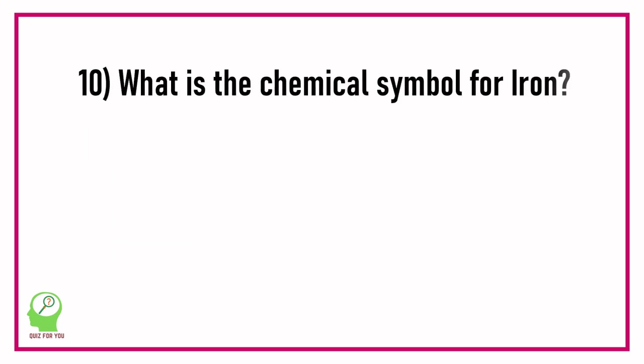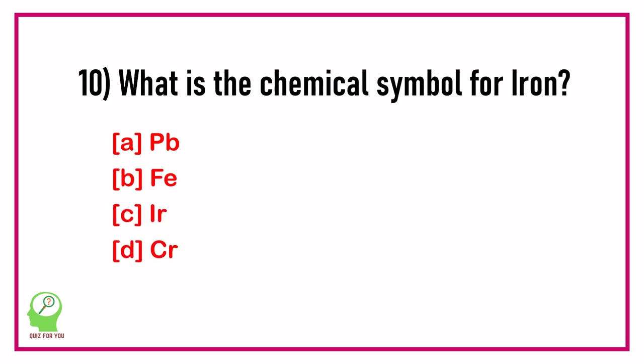Question number ten: What is the chemical symbol for iron? Options are: Pb, Fe, Ir, Cr.